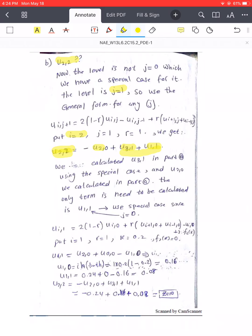To find u(1,1), substitute i equals one into the level-one formula. After substituting all known values we get u(1,1) equal to a specific numerical result. Then for u(2,2): the formula involves u(3,1), u(1,1), and u(2,0). Substituting those computed values gives the final answer. In this case u(2,2) equals zero, completing the required calculation.